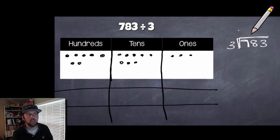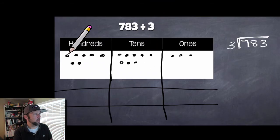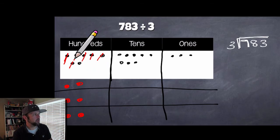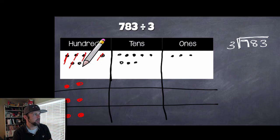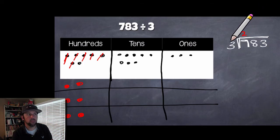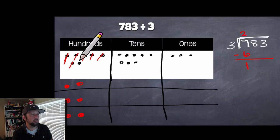So down here we have three groups, and I've represented 783 in the place value chart: seven hundreds, eight tens, and three ones. Coming over to the standard algorithm side, we set up 783 divided by 3 inside the division symbol. Let's start with the hundreds. I distribute two 100s into each of the three groups — that takes care of six hundreds. On the standard algorithm side: 7 divided by 3 gives us 2, and 3 times 2 is 6, so 7 minus 6 leaves 1 hundred remaining.